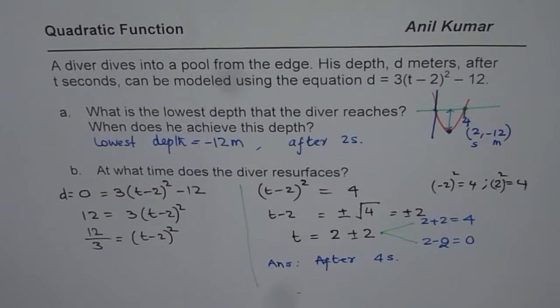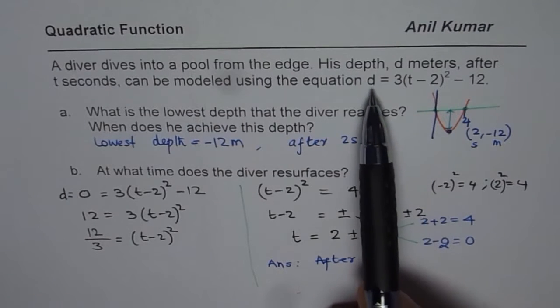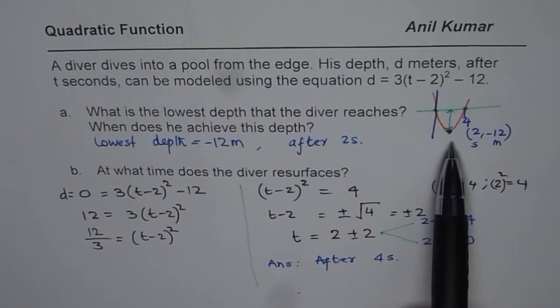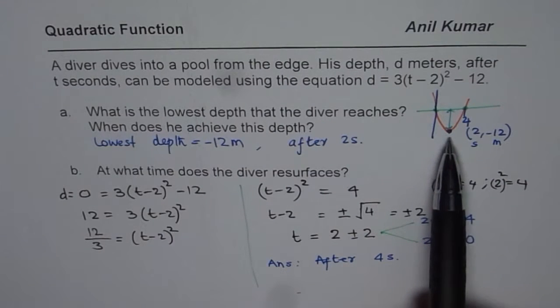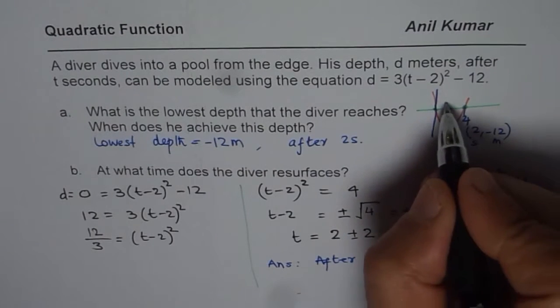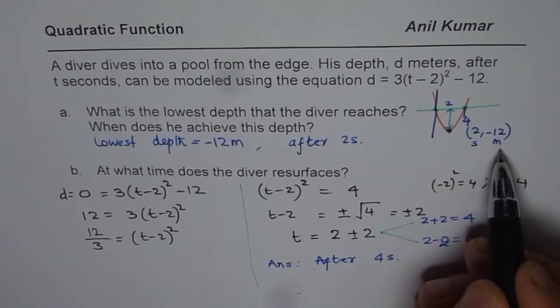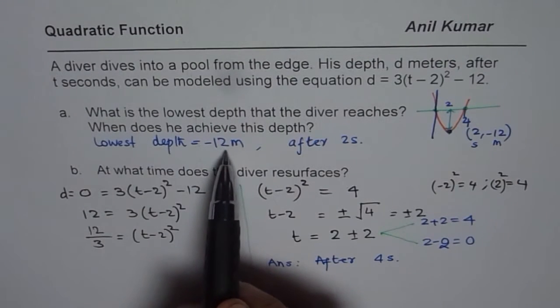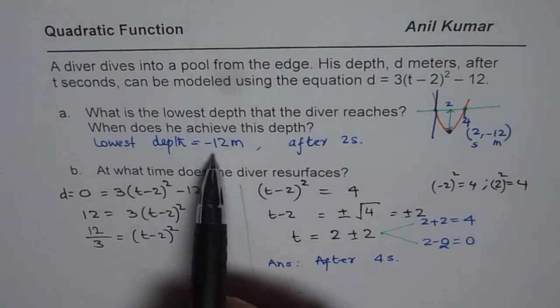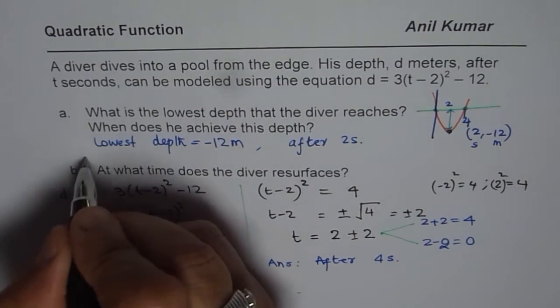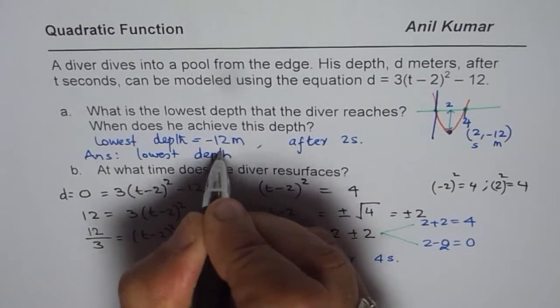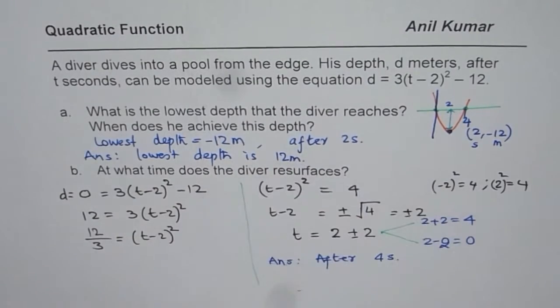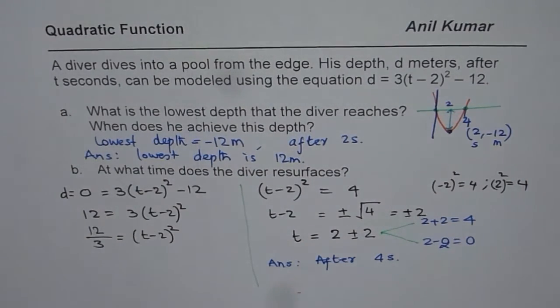So it is a very important and tricky question. Try to understand the application. The model here represents the depth of the diver with time in seconds. The lowest point or the maximum depth occurs after 2 seconds, and the depth is 12 meters. Actually, when I write lowest depth, I should write 12 meters. That minus does not have significance. The lowest depth is 12 meters. When we say depth, it means negative.